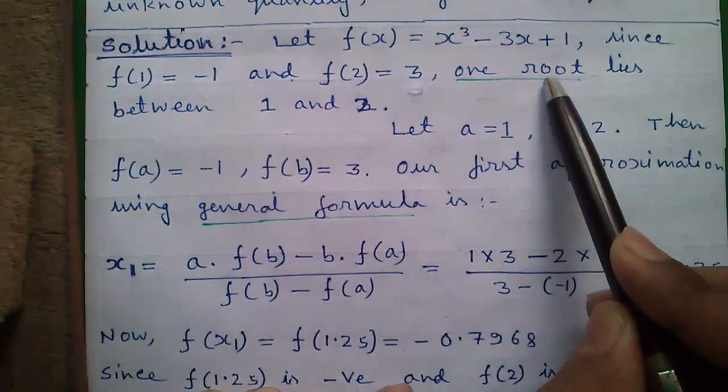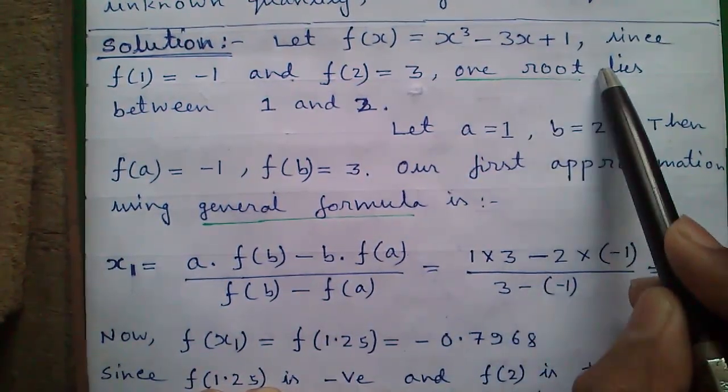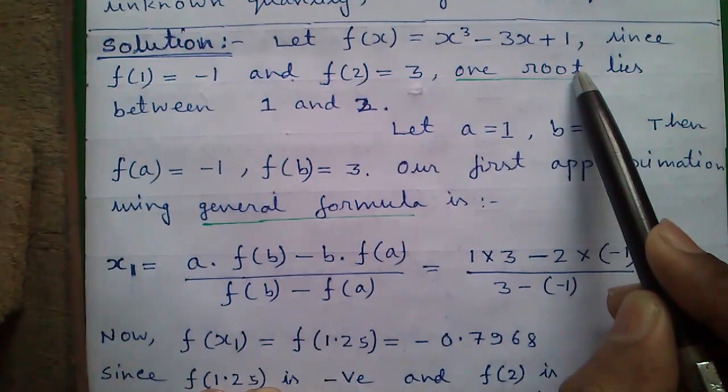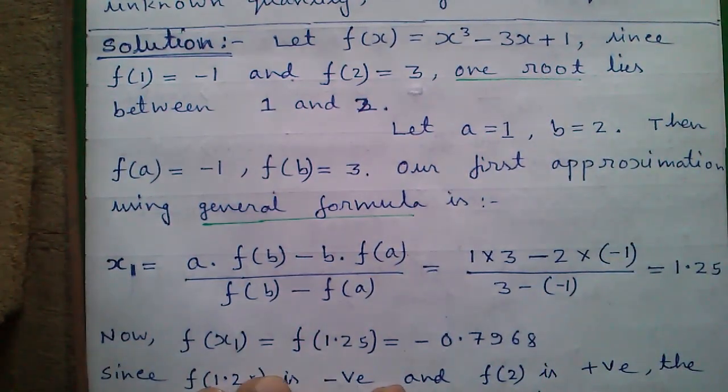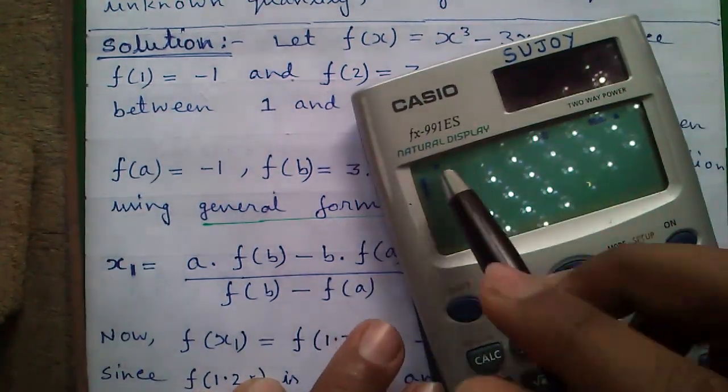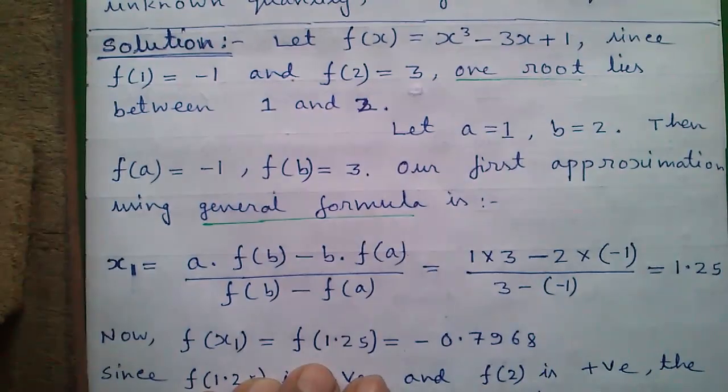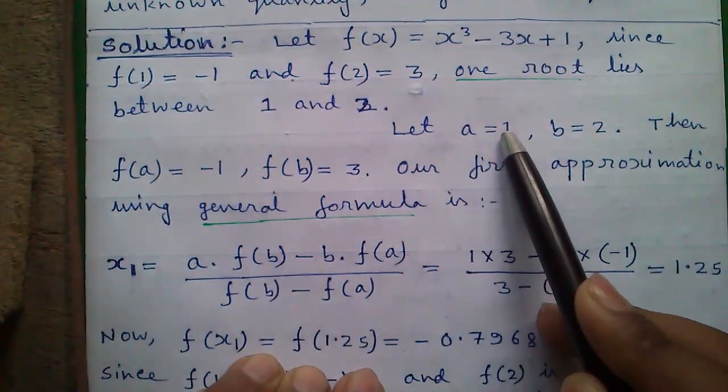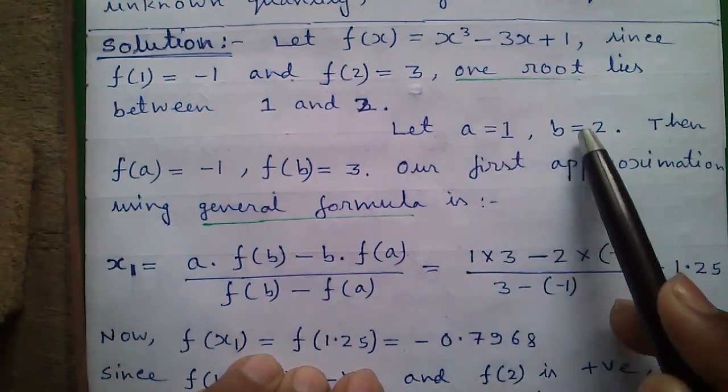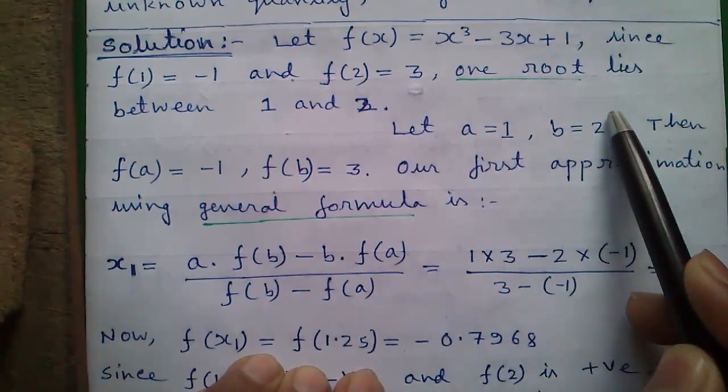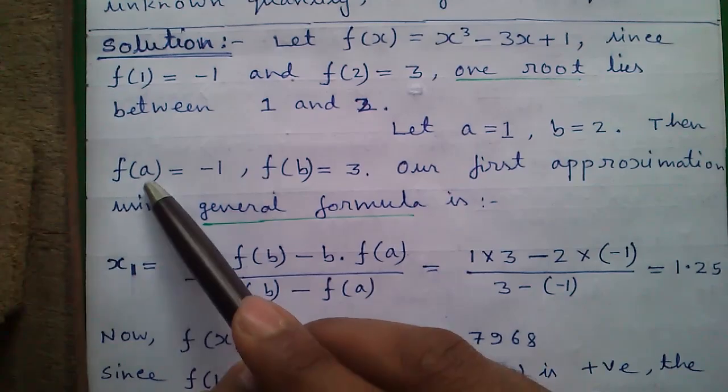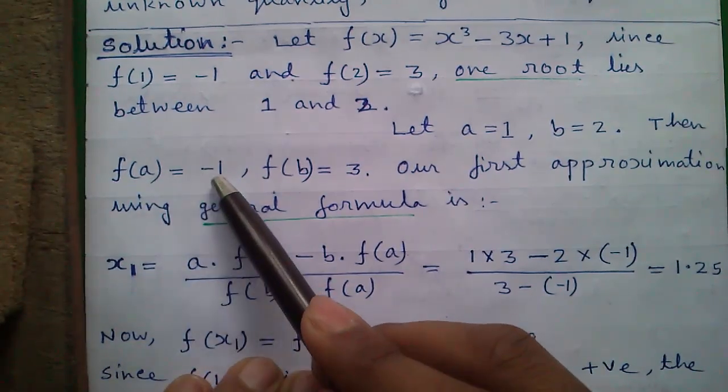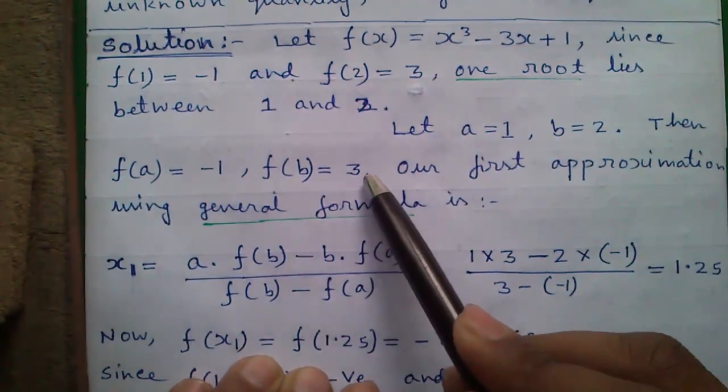One root lies between 1 and 2. In some questions, there may be more than one root. To see more than one root, please see my another video on Mode 5 Equation Solver mode of Casio FX-991ES calculator. You can get that video on my YouTube channel. Let a = 1, our lower limit of the range, and b = 2, our upper limit of the range. Then f(a) will be -1 and f(b) will be 3.